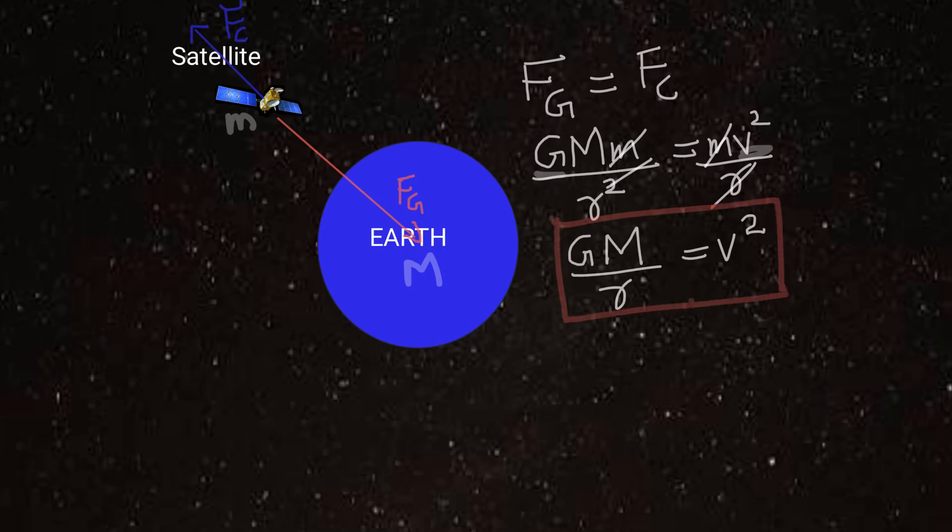This equation is important. A question can come - what does satellite's balancing force depend upon? Gravitational constant G, mass of the earth, distance between the two and velocity of the satellite. Please note here that this balancing force does not depend upon the mass of the satellite and also it does not depend upon the size of the satellite.